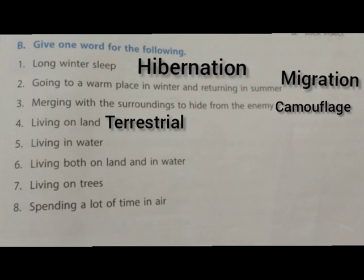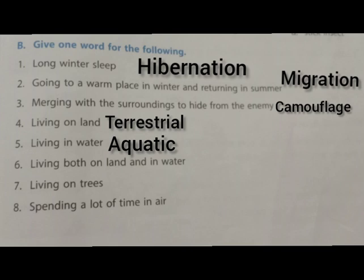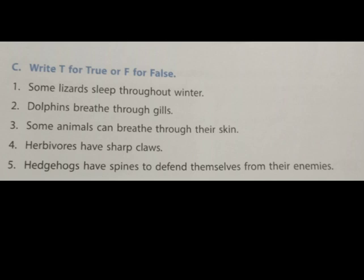Fourth question: Living on land. That is terrestrial. Fifth one: Living in water — it is aquatic. Sixth one: Living both on land and in water — they are called amphibian. Seventh one: Living on trees — arboreal. Eighth question: Spending a lot of time in air — they are aerial.